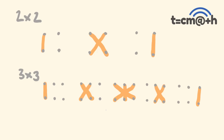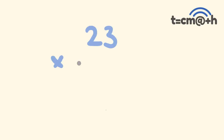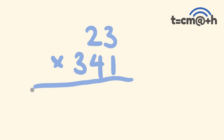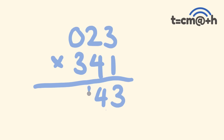Say we multiply 23 times 341. Here's a little trick: put a 0 in front of the 23 — we've just got a 3-digit by 3-digit number now. 3 times 1 is 3. We have 2 times 1 which is 2, and 3 times 4 which is 12: 2 plus 12 is 14 — put the 4 down, carry the 1. Then 0 times 1 is 0, 2 times 4 is 8, 3 times 3 is 9: 8 plus 9 is 17, plus 1 is 18 — put the 8, carry the 1. 0 times 4 is 0, 2 times 3 is 6, plus 1 is 7. And 0 times 3 is 0. Our answer is 7,843.